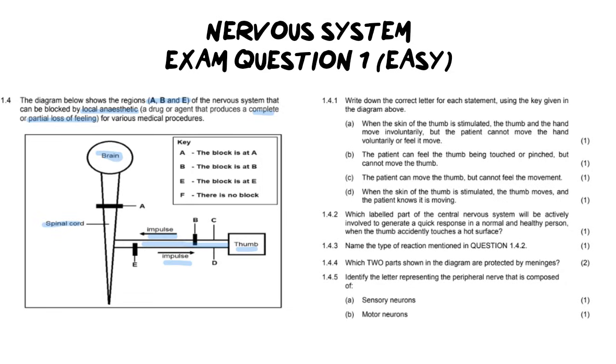The various letters however indicate the block is at A, the block is at B, the block is at E or there is no block. And I'm pretty sure you can maybe figure this out, but essentially what they're going to ask us here is if we were to block off these particular regions of our nervous system, what would be the impact? Would you feel it? Won't you feel it? That kind of thing. So let's actually have a look at the questions and see if that's true.